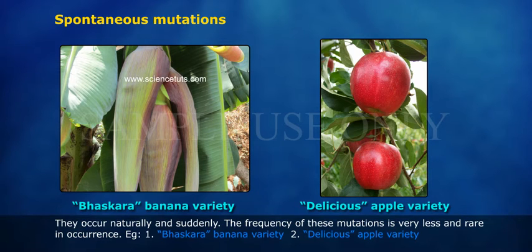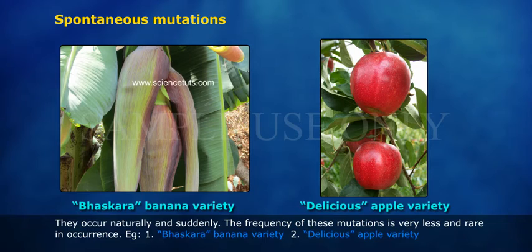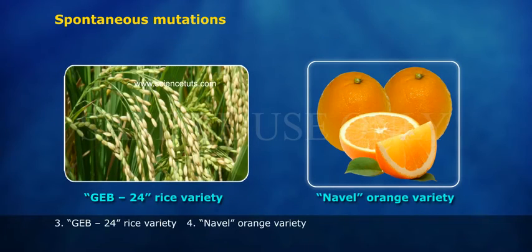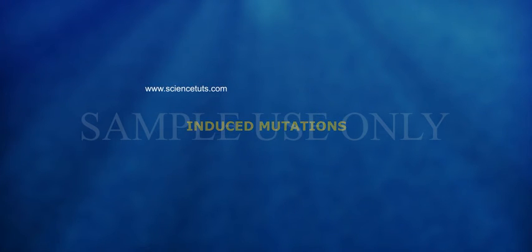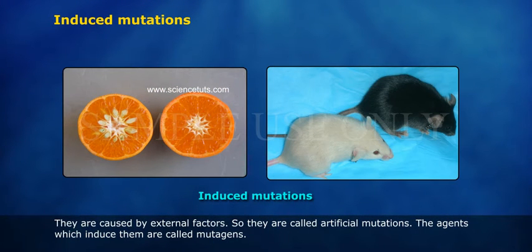Examples of spontaneous mutations include: 1. Baskara banana variety, 2. Delicious apple variety, 3. GEP24 rice variety, and 4. Navel orange variety.